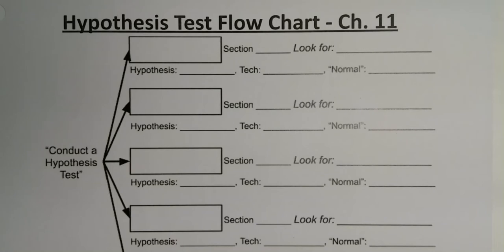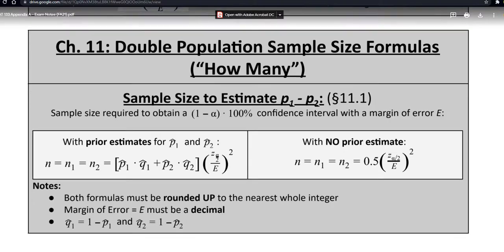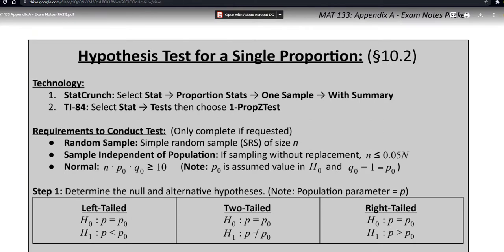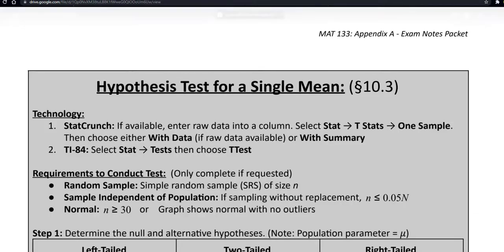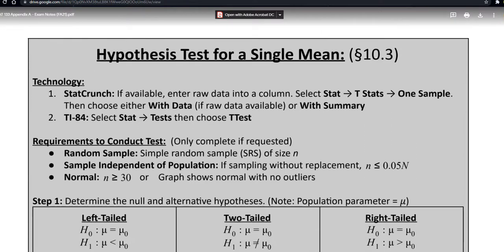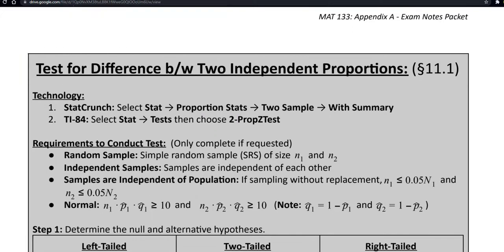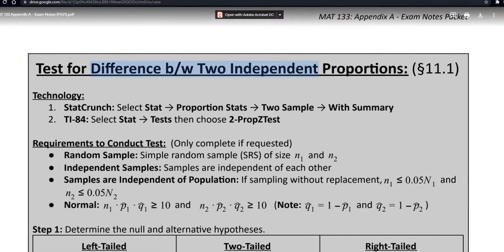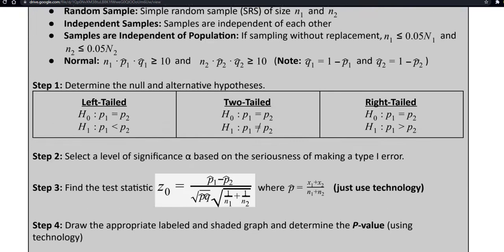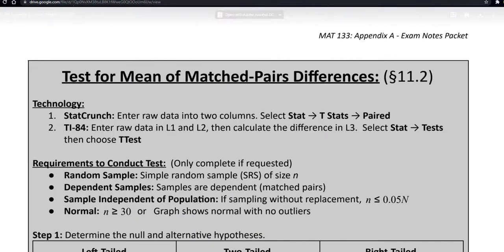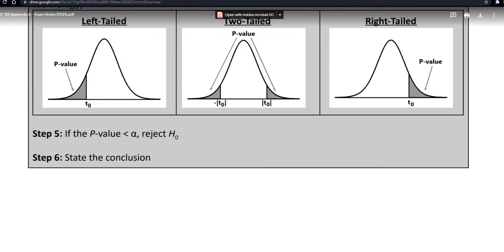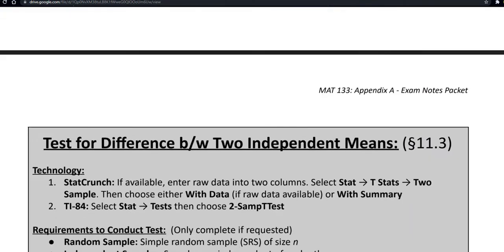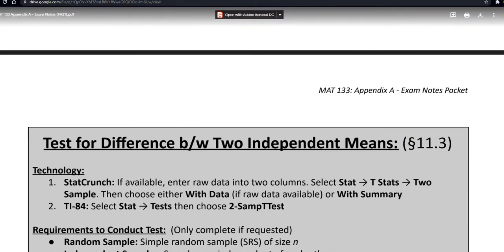Let's look at the exam notes packet to help keep them organized. We learned the single proportion test back in chapter 10, then the single mean test also in chapter 10, then in chapter 11 the difference in two independent proportions, then the matched pairs difference for means, and finally the difference in two independent means.